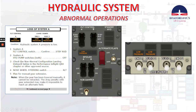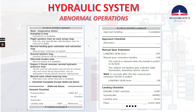Check the non-normal configuration landing distance tables in the performance in-flight QRH chapter or other approved source. Nose wheel steering switch — alternate. Plan for manual gear extension. Note: when the gear has been lowered manually it cannot be retracted. The drag penalty with the gear extended may make it impossible to reach an alternate field. Here you have a list of the inoperative items you will have if you lose system A.